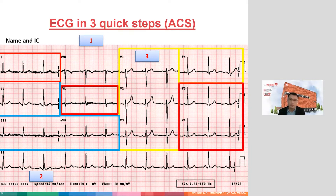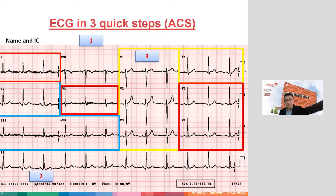The last territory is the one most commonly missed, which is why I've highlighted it in red. These leads occur at different places on the ECG — you see lead 1 here, AVL here, and V5 and V6 on the other side. But together they constitute the leads looking toward the left lateral border of the heart. We call this the lateral territory, usually supplied by the circumflex, a large diagonal, or in some cases a very large obtuse marginal branch.